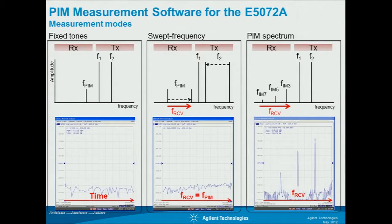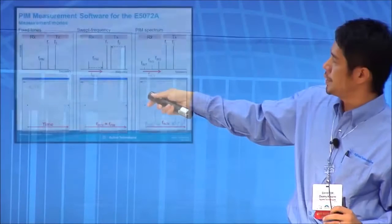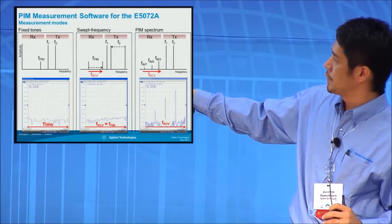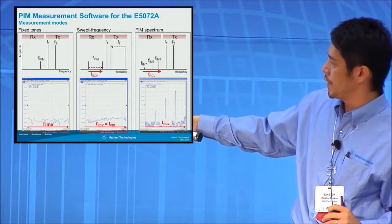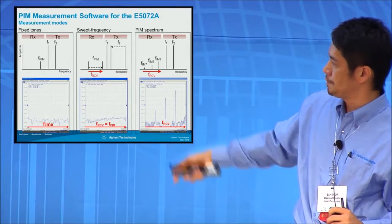The third mode is PIM spectrum. If you put two fixed frequencies and sweep the receiver, you can measure like a spectrum analyzer.